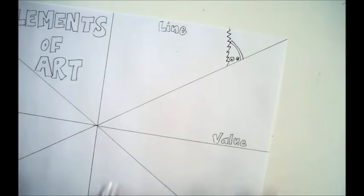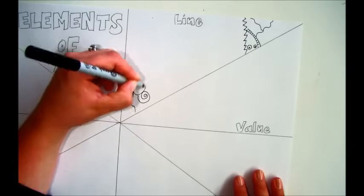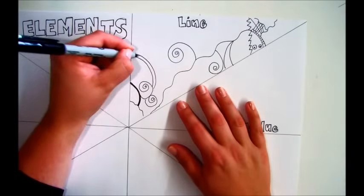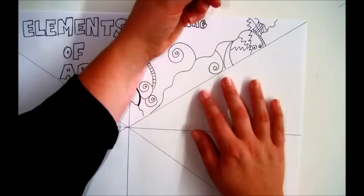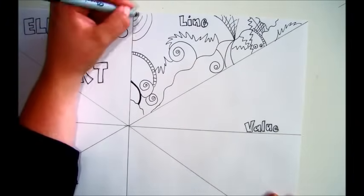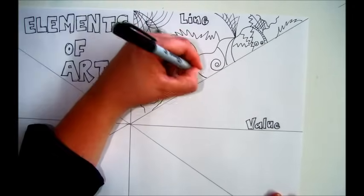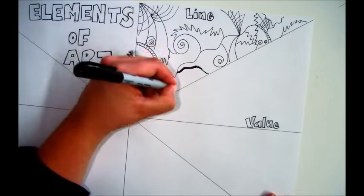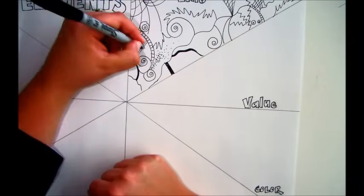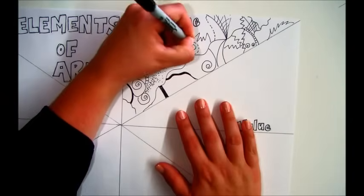So the first element of line is going to look similar to a Zentangle. When you're creating different kinds of lines in this section, think thin, thick, wavy, curvilinear, straight, dashed, dotted, hatched, crosshatched, stipple. Any kind of line that you can imagine, go ahead and illustrate it in this section.